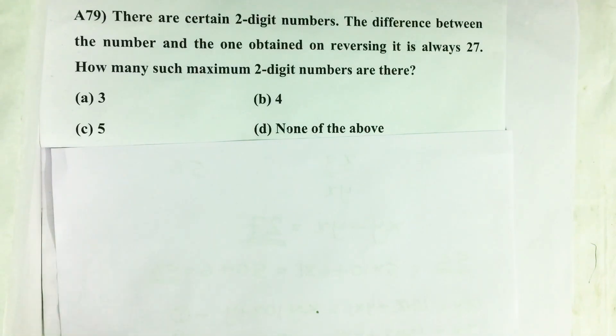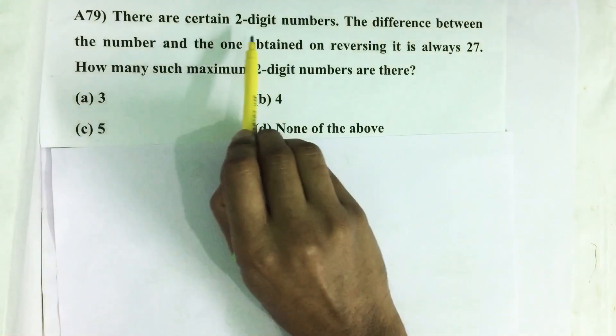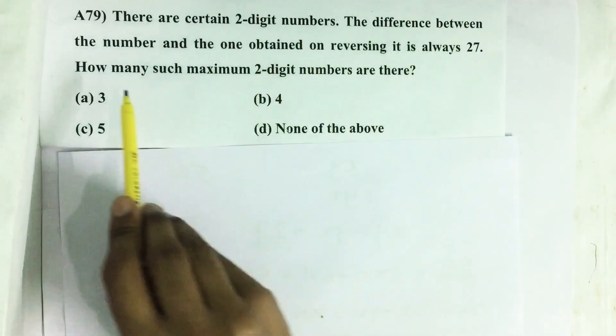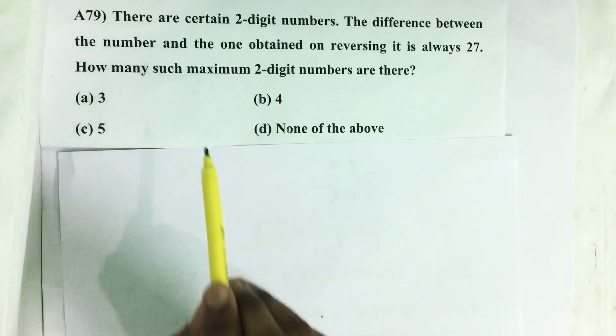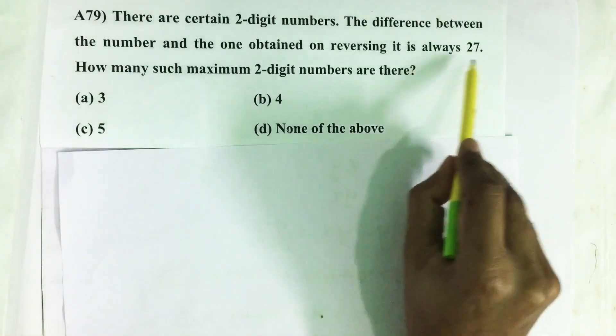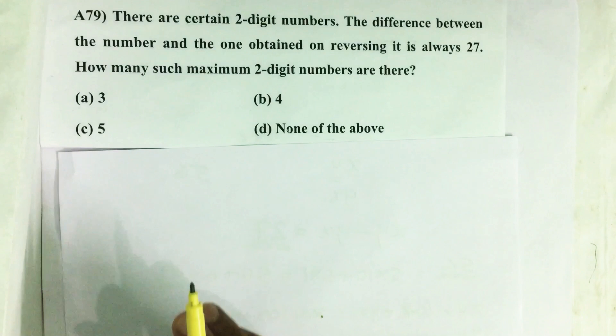Hello everyone, here I am going to solve 2017 CSAT question number 79 from question paper series A. There are certain two-digit numbers. The difference between the number and the one obtained on reversing it is always 27. How many such maximum two-digit numbers are there?